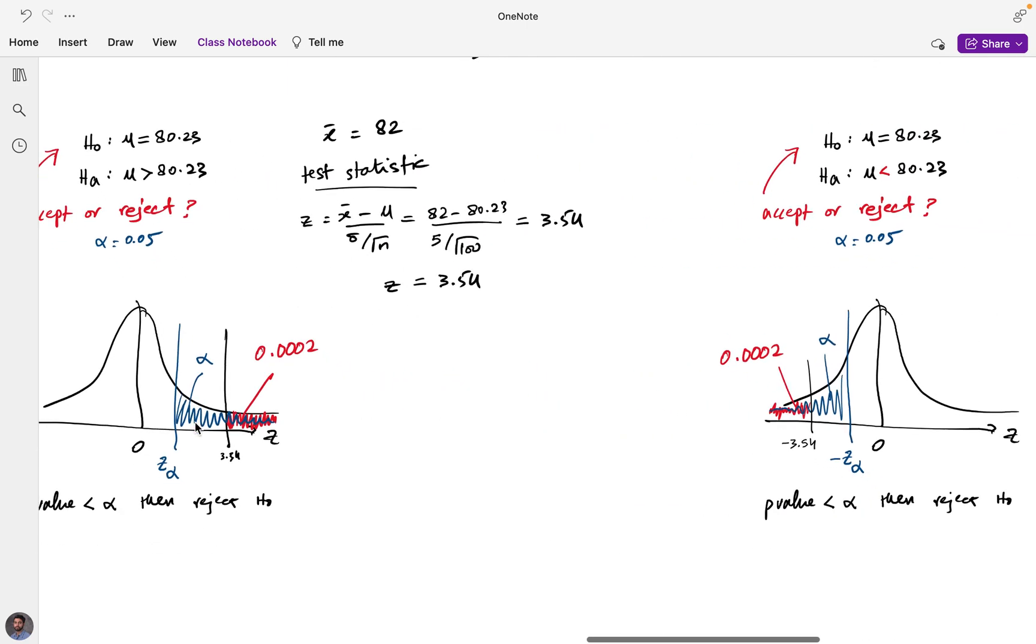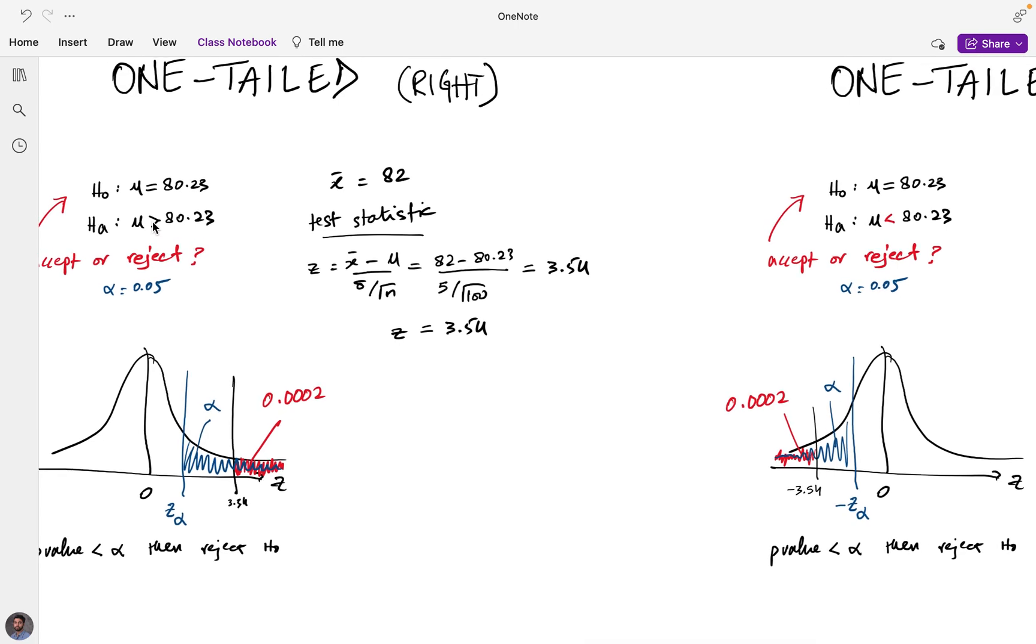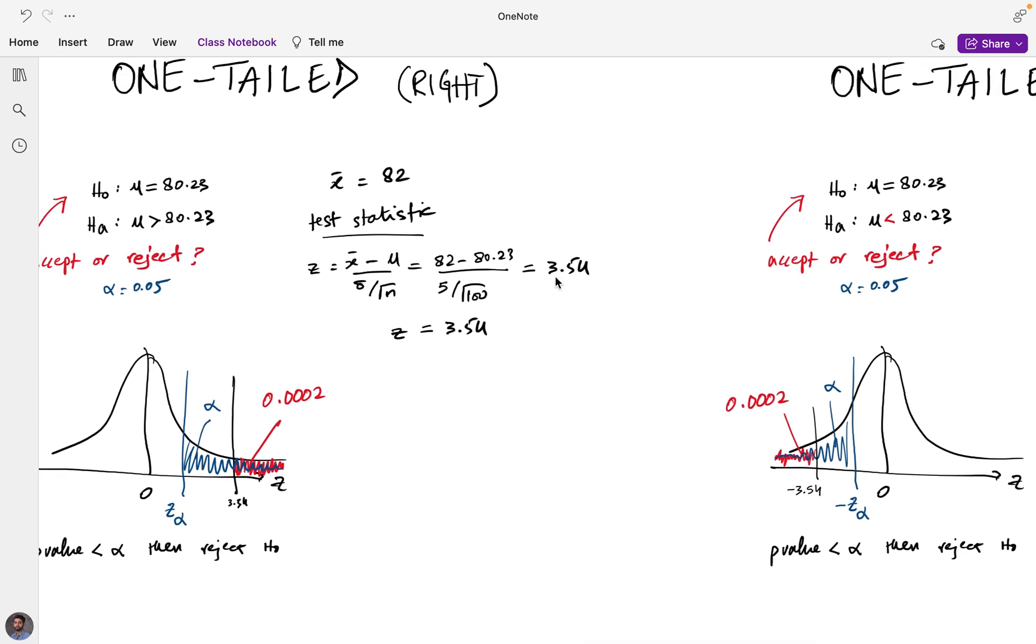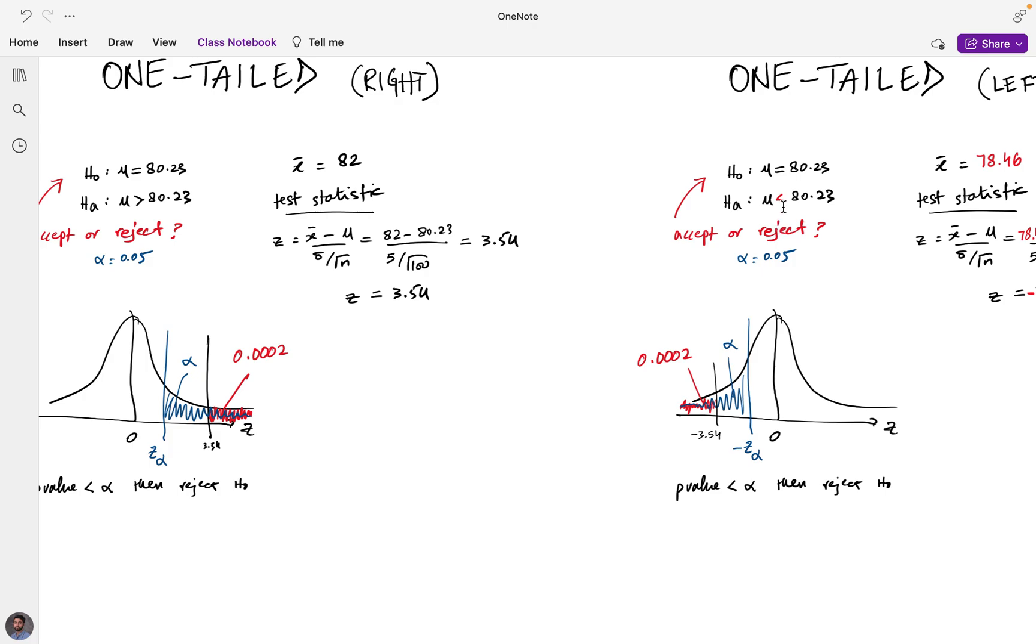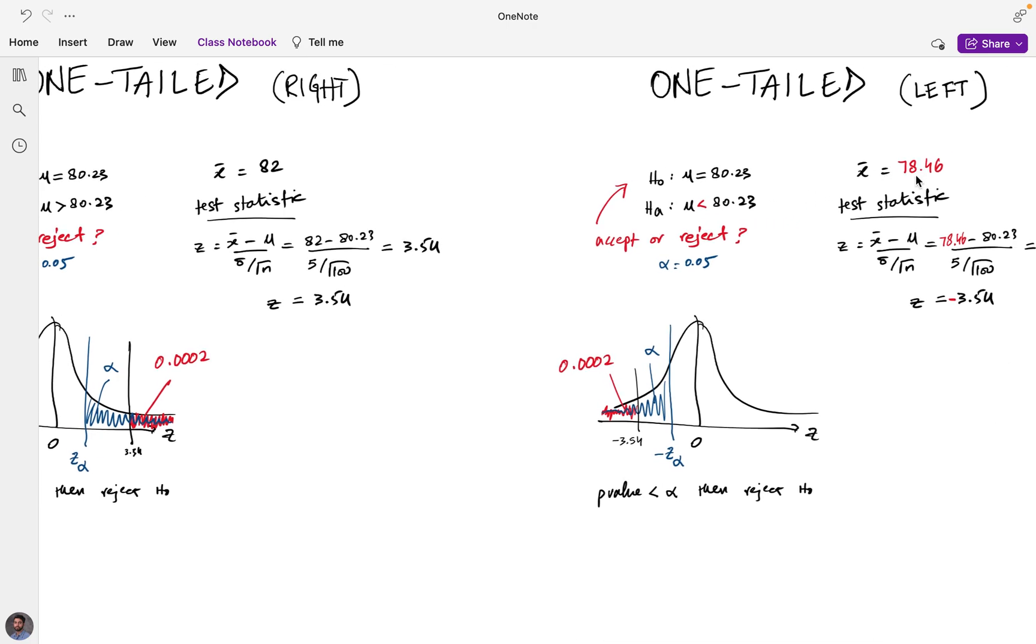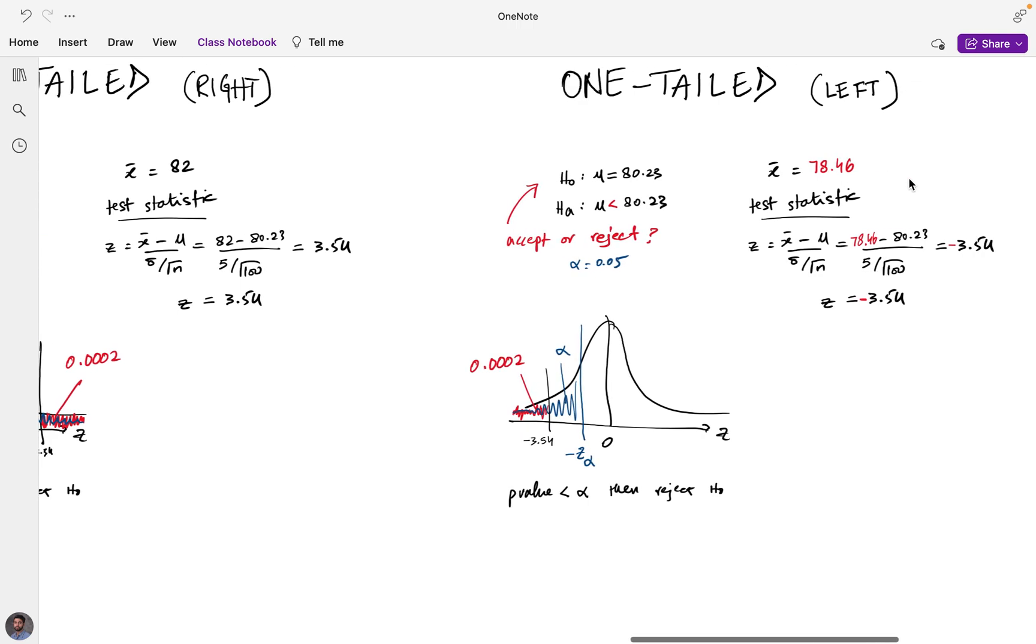In the previous instance we had the alternative hypothesis that's greater than 80.23. And so if you're checking for less than 80.23, our sample mean would be something less than 80—78.46, for example—would translate to some z-value which would correspond to some p-value. In this case, it's the same 0.0002.